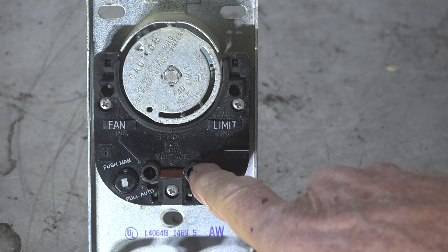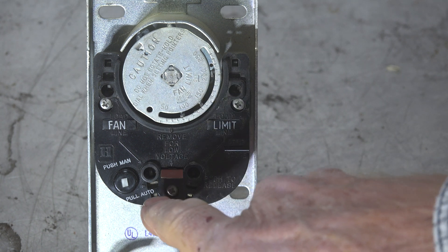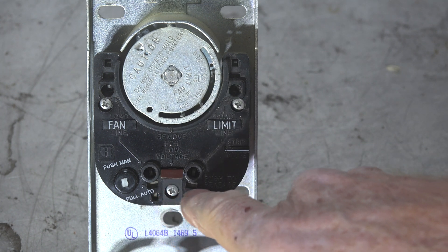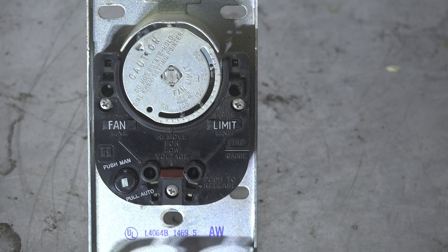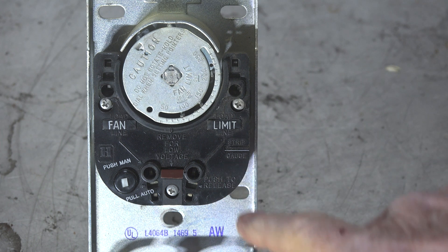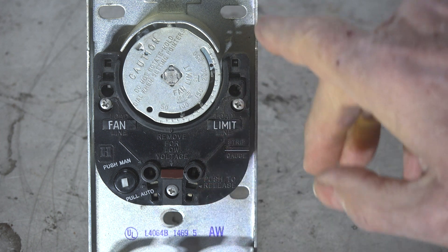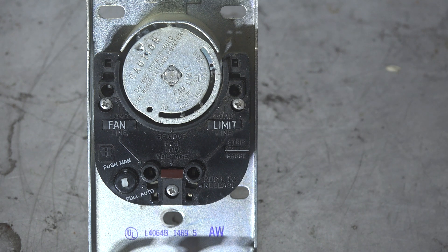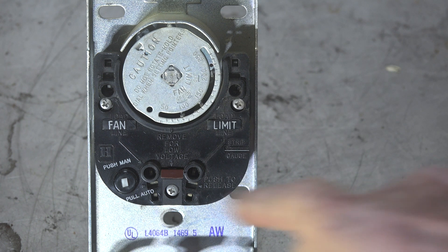In very old furnaces, the way these things used to work is we would feed power in here to the bottom, and there's a jumper between the two—and I'm going to explain that in a minute—so that there would be power on either side. If the limit shut off, it would shut off the 120 volts to the control system of the furnace.